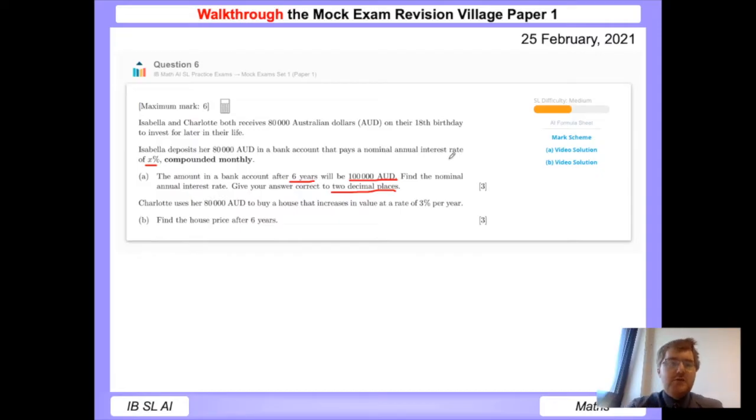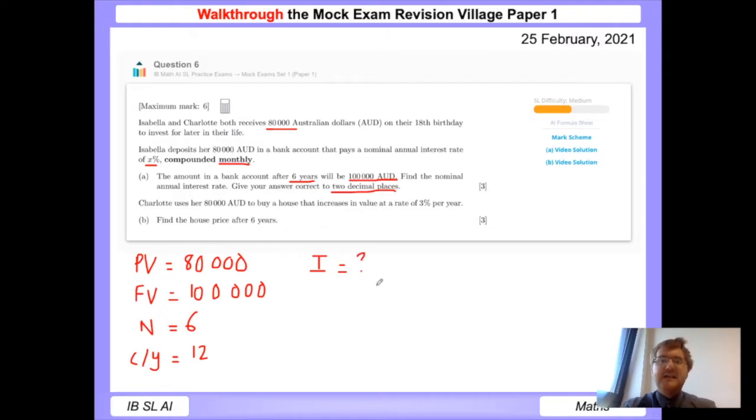The way I do these questions is I write down the information I'm given. My present value is 80,000 dollars. The final value is 100,000 dollars. The number of years is six. The compounding is monthly, so there are 12 months in a year. The interest rate is what we're looking for, so I'm going to put that as a question mark. Once I've extracted the key information, now I can use my finance solver.